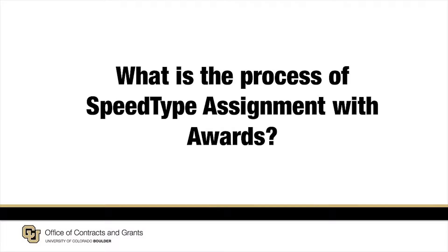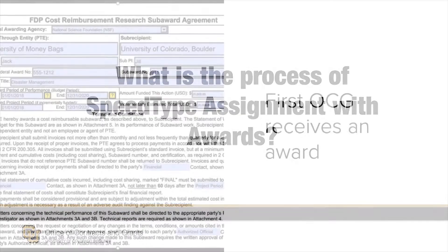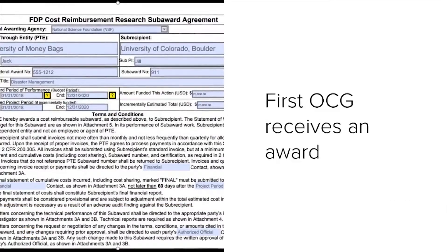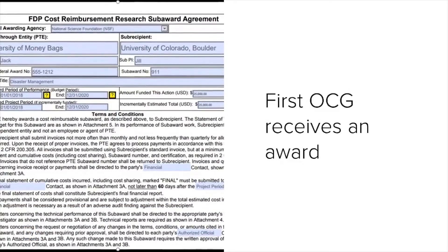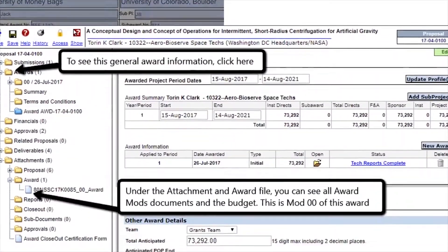Here are the typical steps it takes for OCG and the CCO, Campus Controller's Office, to make this happen. First, OCG receives an award. If you receive an award at the department level, make sure OCG also receives a copy. If you're ever in doubt, forward a copy of the award to ocg@colorado.edu.